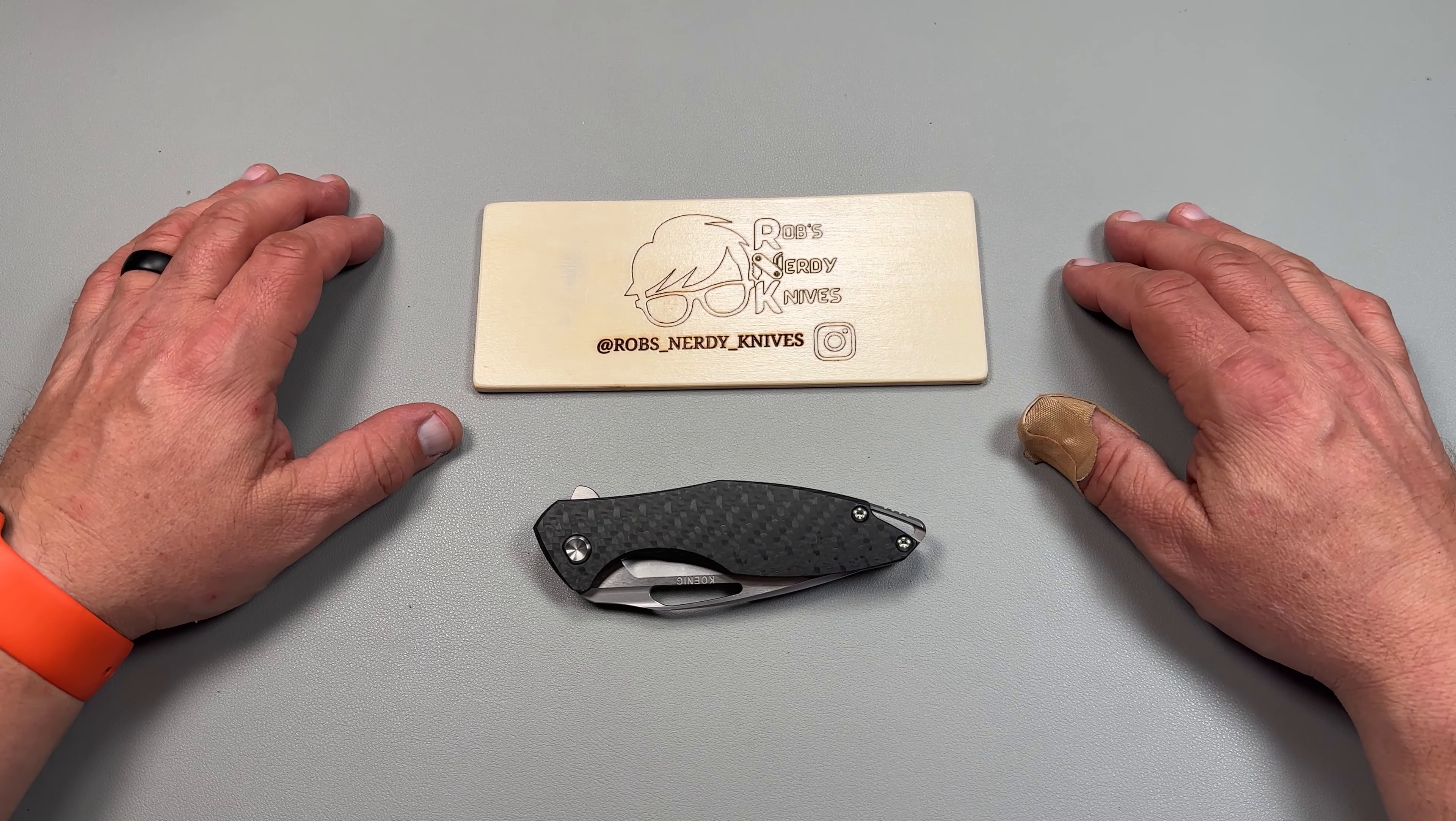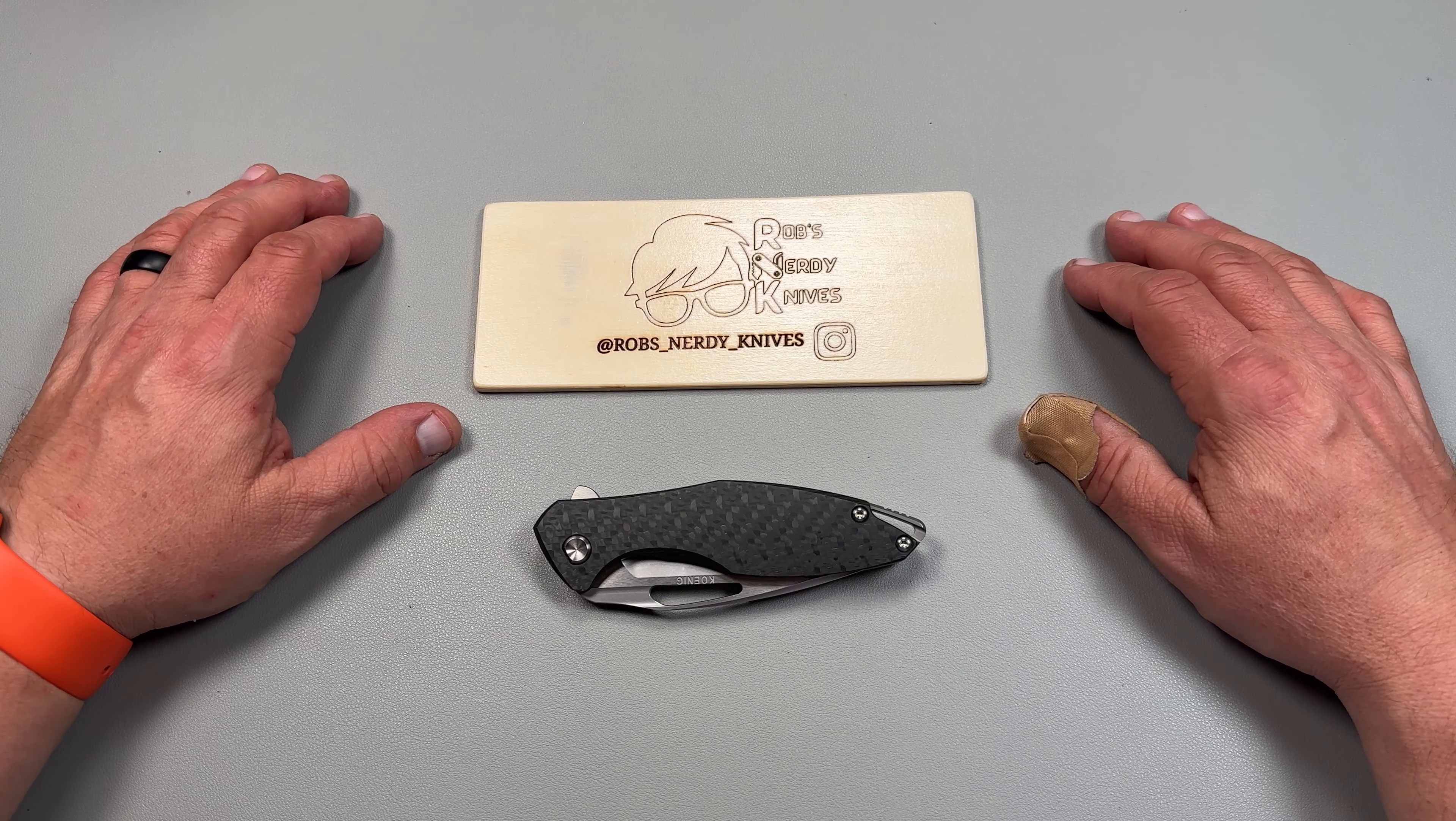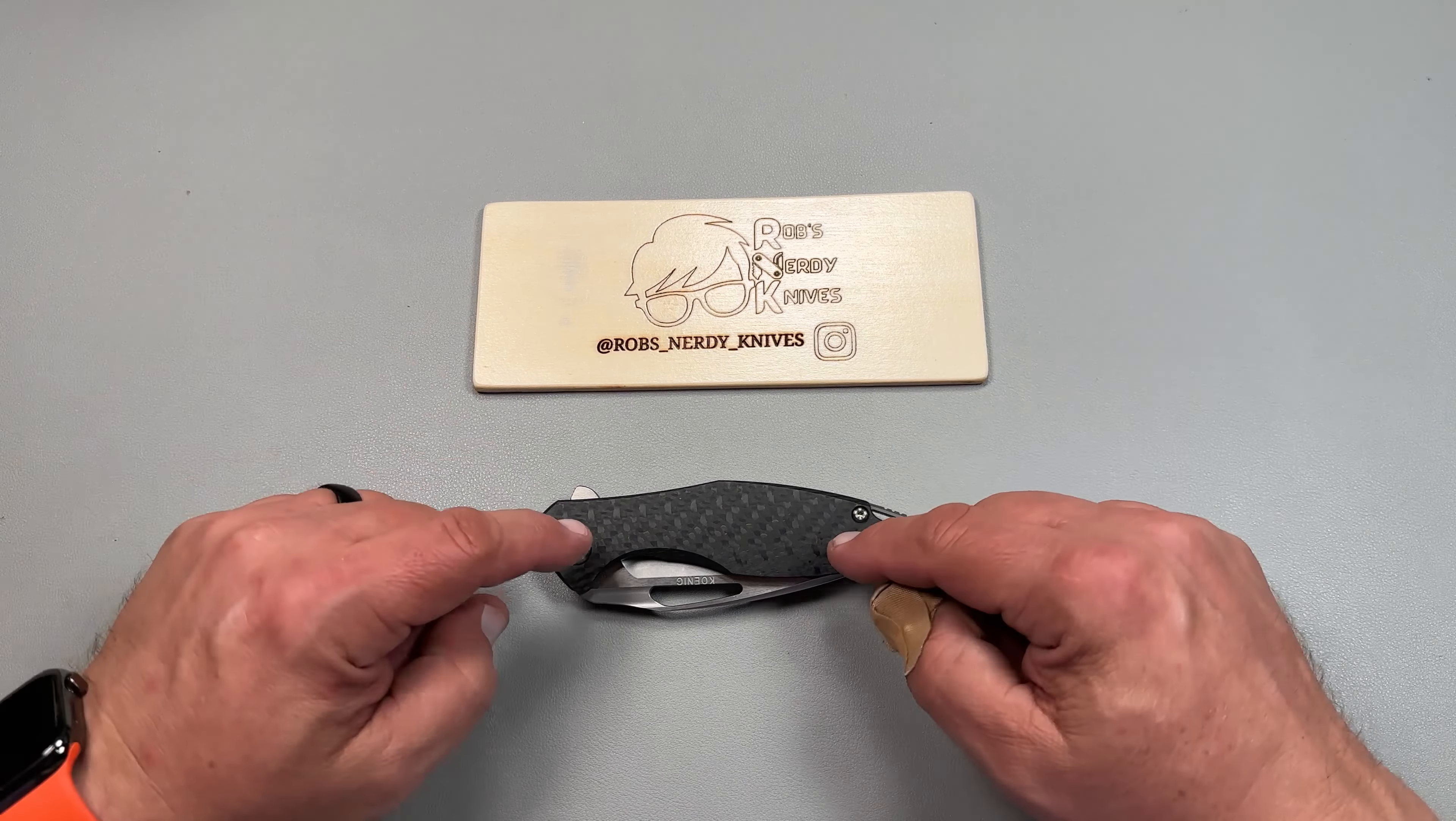Hello y'all on YouTube. This is Rob with Rob's Nerdy Knives. Today we're doing a review and impressions of a knife I've had in my collection for a bit. This is the Koenig Arius in carbon fiber. Let's talk about this knife.